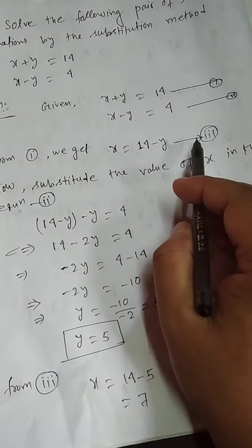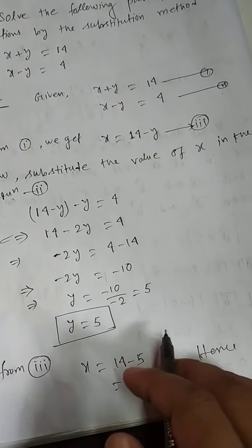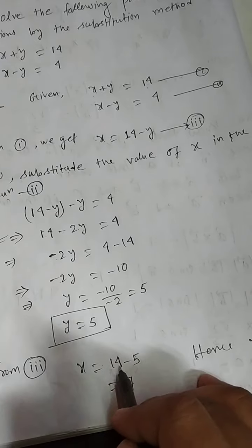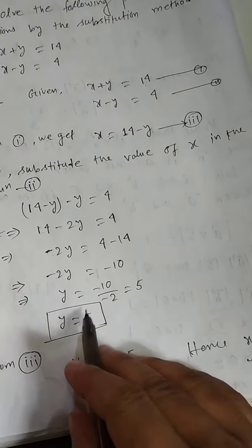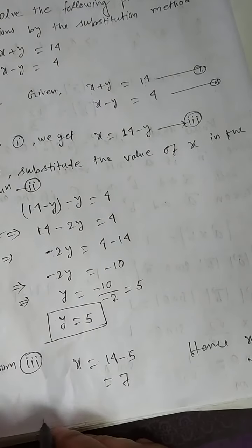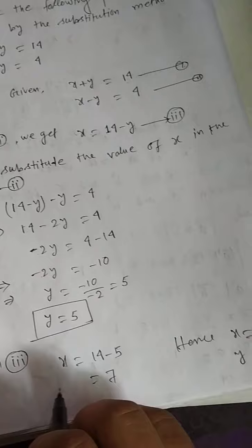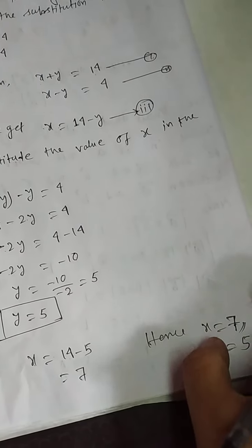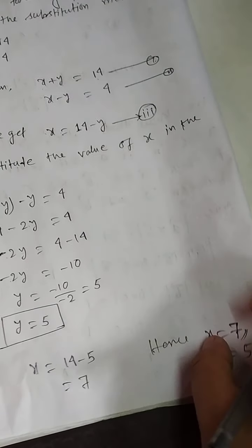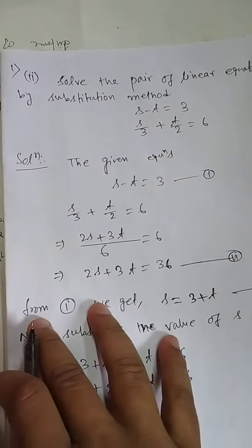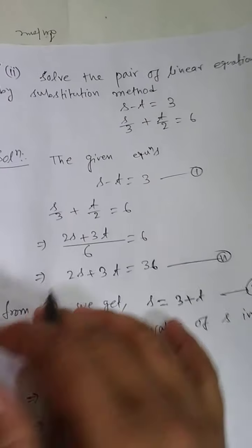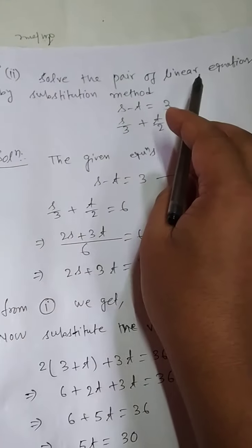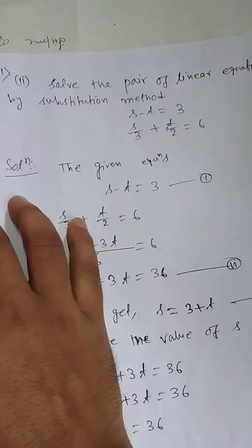From equation number 3, x equals 14 minus 5, so x equals 7. Hence x equals 7 and y equals 5. Next question: solve the following pair of linear equations by the substitution method.